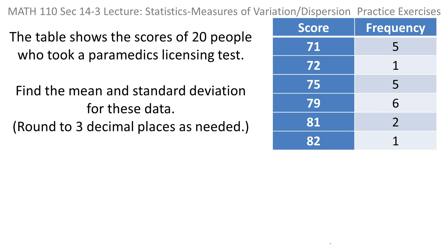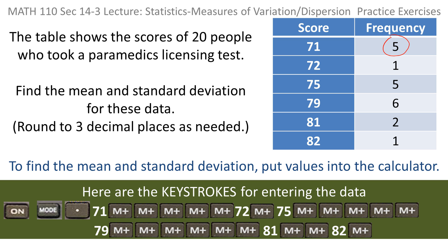The table shows the scores of 20 people who took a paramedics licensing test. Find the mean and standard deviation for the data and round to three decimal places as needed. The frequency column tells you how many times to enter each score. So for instance, 71 gets entered five times.